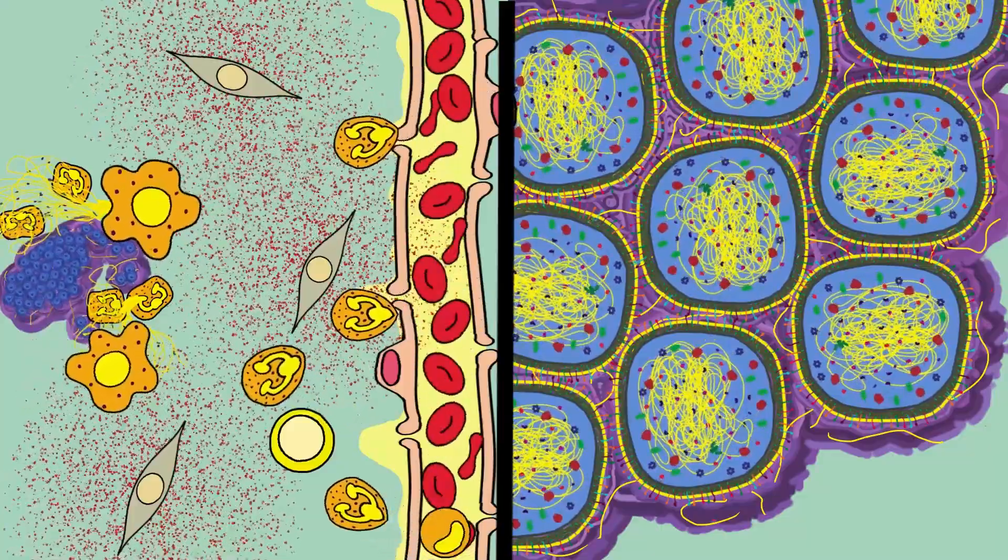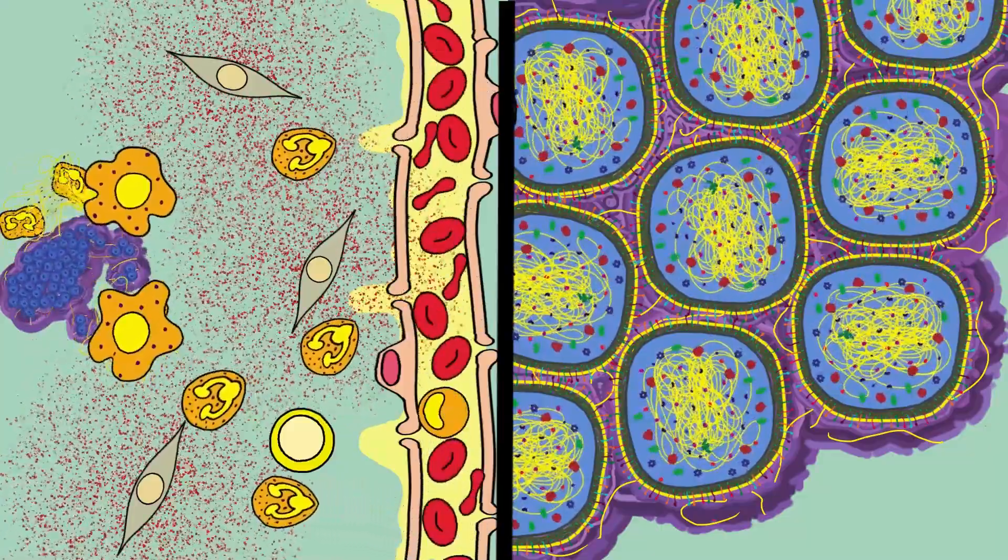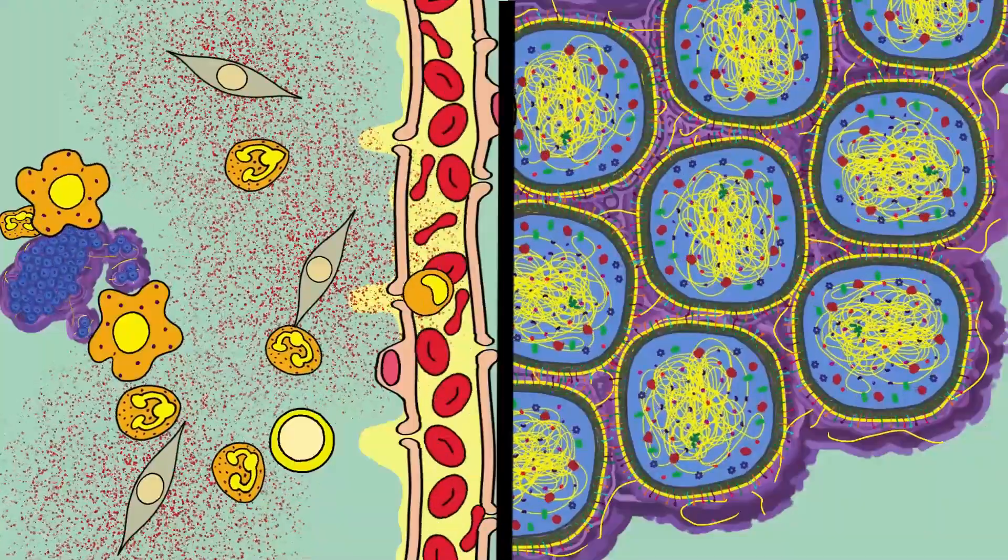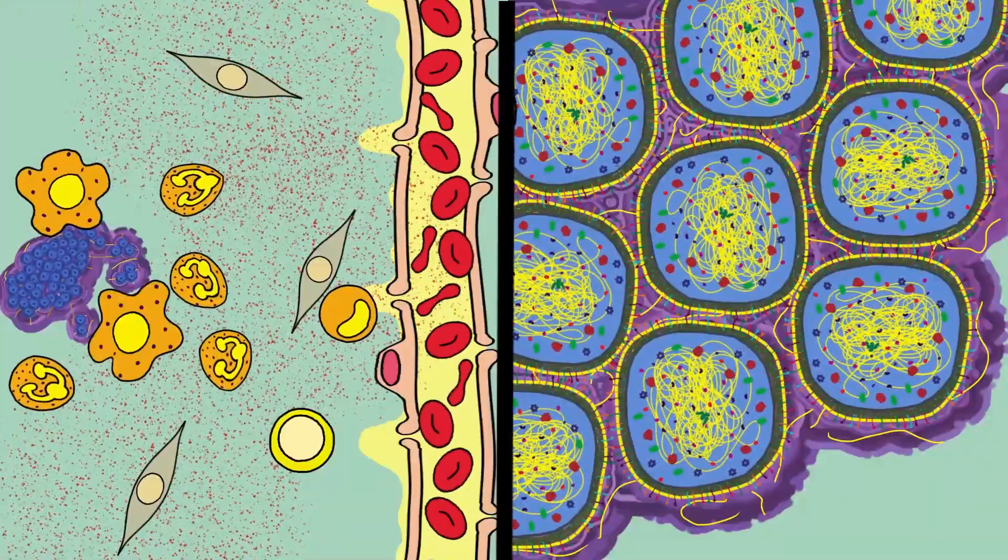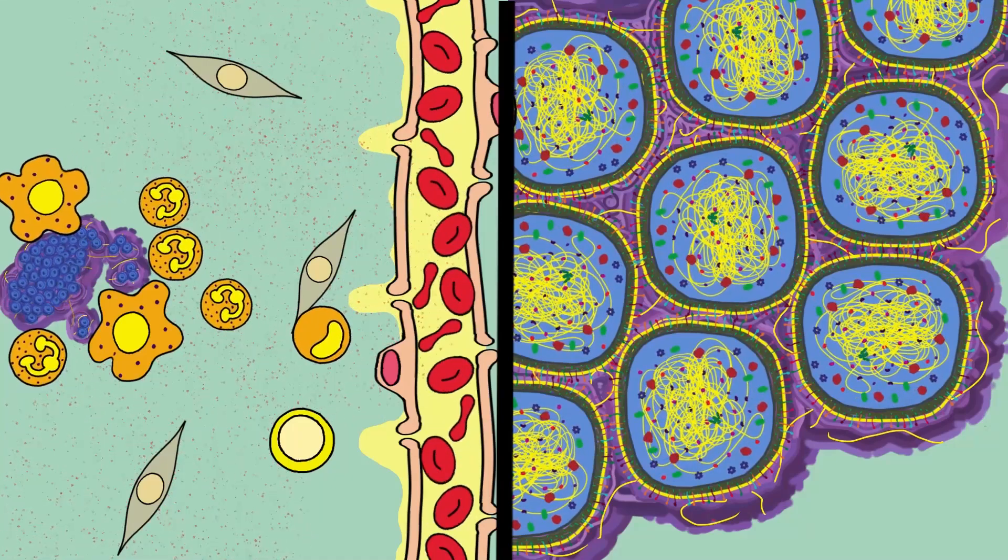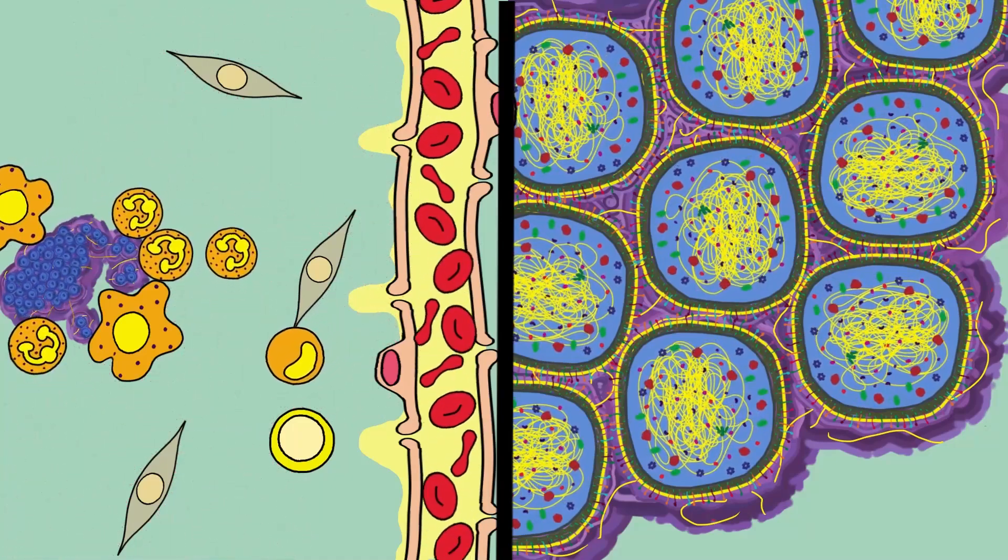To further evade the immune system and secure its survival, Staphylococcus aureus has evolved a repertoire of proteins to defend from the immune system. But these proteins are futile when undertaken by a single bacterium acting alone.